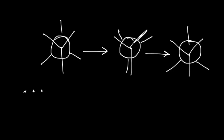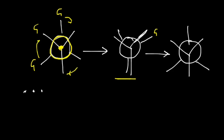In a Newman projection, there is a front carbon atom and the back carbon is represented by the circle. The lines show the other connections with atoms, and there will be some groups present here. This is the first type of structure. Now if I rotate the back carbon by 60 degrees, it takes this form where one group is behind another group — a congested position.